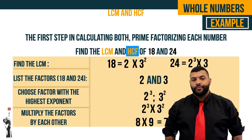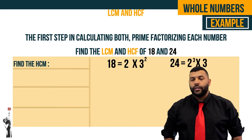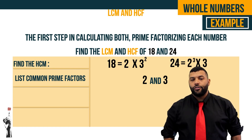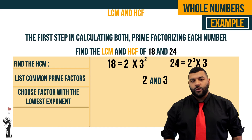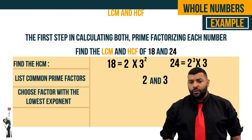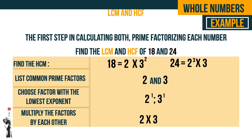What about the HCF? For the HCF we list all the common prime factors that both 18 and 24 have, which are 2 and 3. Next we choose the factor with the lowest exponent. In 18 we have 2 to the power of 1, and in 24 we have 3 to the power of 1. So we choose 2 and 3 with exponent 1. Multiplying these: 2 times 3 gives us 6. So 6 is the highest common factor between 18 and 24.